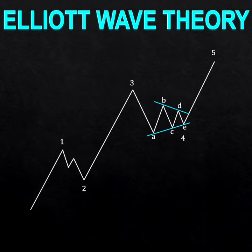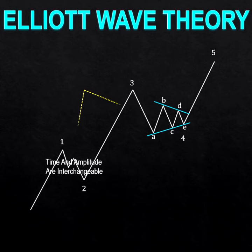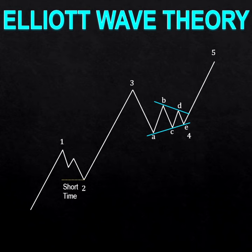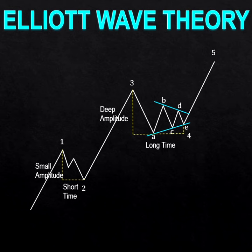In terms of time range and amplitude, wave 2 and wave 4 are also interchangeable. If the time range of wave 2 is shorter and the amplitude is smaller, the time range of wave 4 will be longer and the amplitude is deeper, and vice versa.